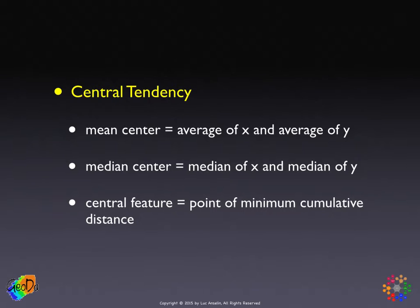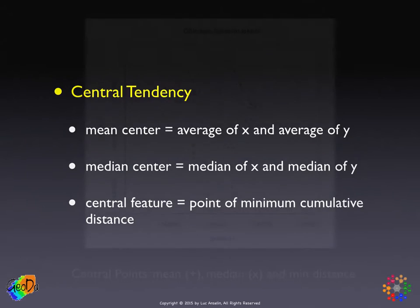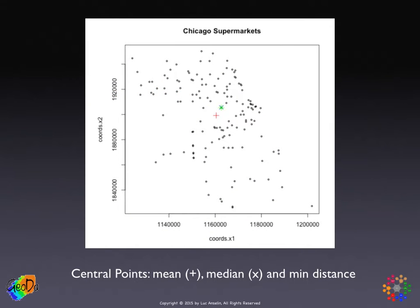The central feature, or point of minimum cumulative distance, is more complicated to compute — it's the solution to an optimization problem. In our Chicago example of supermarket locations in 2014, we see the mean center as the red plus sign and the median center as the blue cross. The center of minimum distance is basically the same as the median center, shown as a small triangle superimposed on the cross.